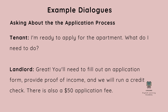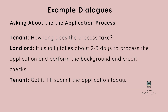Now you have made your decision and you want to talk about the application process. I'm ready to apply for the apartment. What do I need to do? Great. You'll need to fill out an application form, provide proof of income, and we will run a credit check. There is also a $50 application fee. How long does the process take? It usually takes about two to three days to process the application and perform the background and credit checks. Got it. I'll submit the application today.